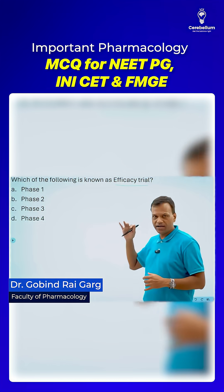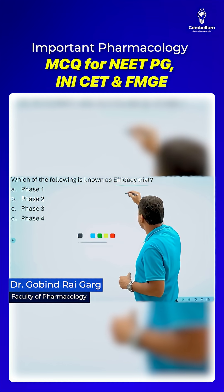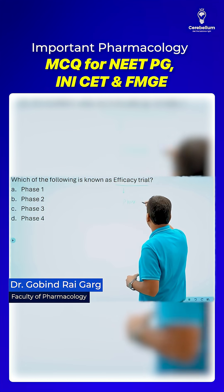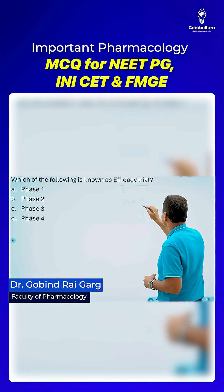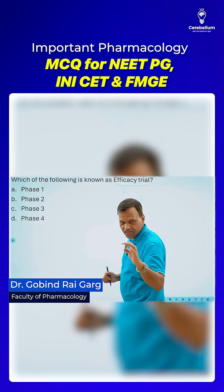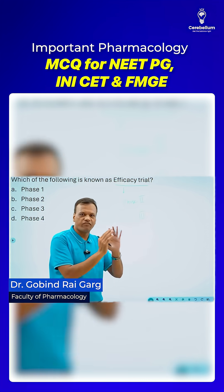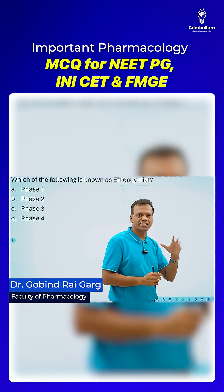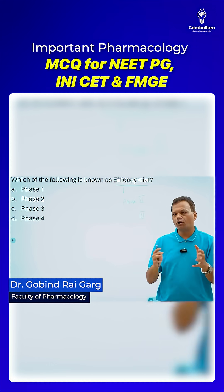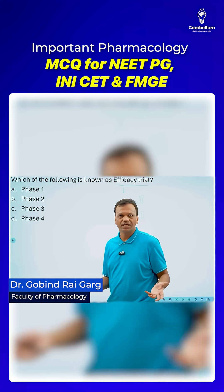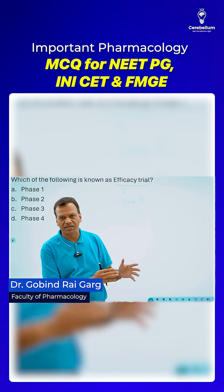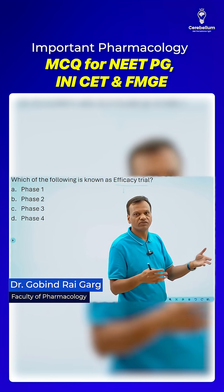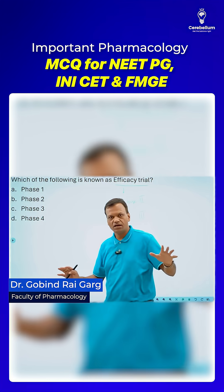What is important is that efficacy is tested in two phases — both phase two as well as phase three. Remember, in phase one efficacy is not tested because phase one is done in healthy people. When we are testing a drug in healthy people, we will not test for efficacy. It's logical — like if a person is not having TB and we are making an anti-tubercular drug, how will we come to know whether it works or not? So efficacy cannot be tested in phase one.